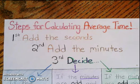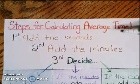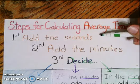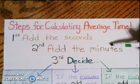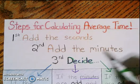So remember, whenever we've got a problem where we're trying to find the average time of two numbers, the first step is to add the seconds. And then the second step is to add the minutes.